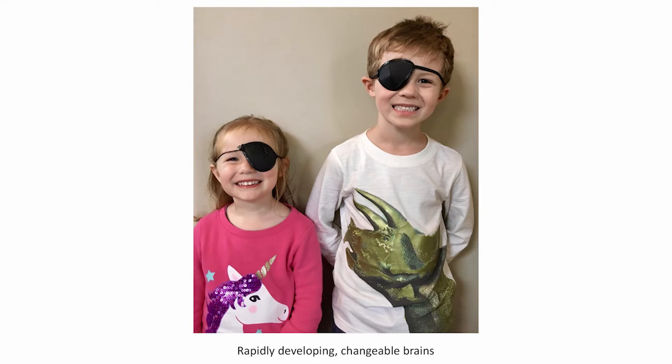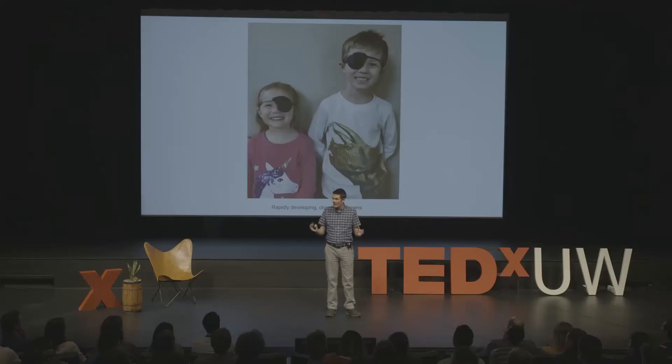Covering the good eye allows the brain to relearn how to use information from the amblyopic eye. However, adult patients who have amblyopia are typically told that they are untreatable, due to the prevailing view that the adult brain no longer has enough capacity for change to relearn how to use the amblyopic eye. So amblyopia provides us with a really unique opportunity to test different tools and techniques for enabling the adult brain to change.